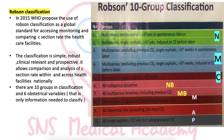Group 5 is previous C-section with singleton cephalic pregnancy more than 37 weeks — all normal parameters except for the previous C-section. You can remember Groups 1 to 5 with the mnemonic NMC: N for nulli (1 and 2), M for multi (3 and 4), and C for previous C-section (5).